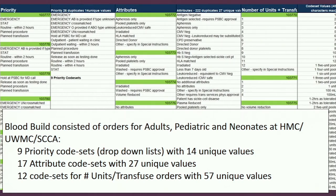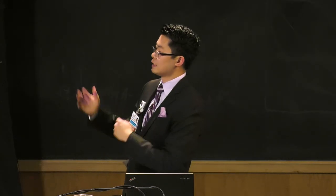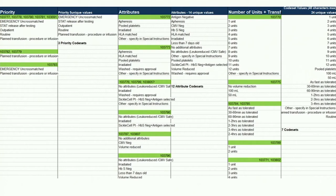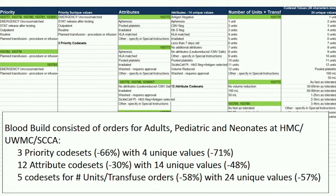Originally there were old code sets with a lot of redundancy — emergency AB provided, emergency crossmatch, emergency uncrossmatched, emergency O provided, outpatient patient is waiting, outpatient patient is within two hours, planned transfusion, and so on. We wanted to take away a lot of the redundant values and take away some of the complexity with ordering. We took the priority code sets down to about four unique values for about a 71% decrease. We took the attribute code sets down to about 14 unique values for about a 48% decrease. And we took the number of units in transfuse orders down to 24 unique values with a 57% decrease.